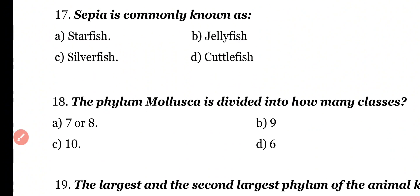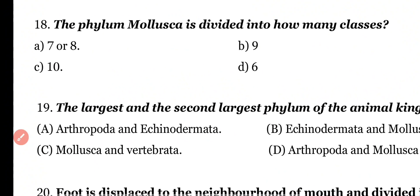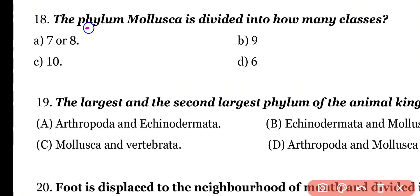Question number 17: Sepia is commonly known as what? Options: Starfish, Jellyfish, Silverfish, Cuttlefish. Correct answer is option D. Sepia is commonly known as Cuttlefish, present in class Cephalopoda.